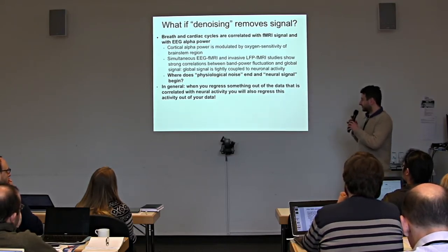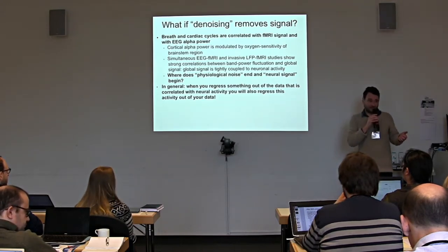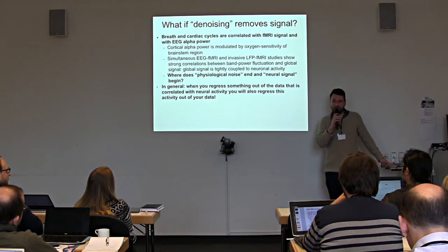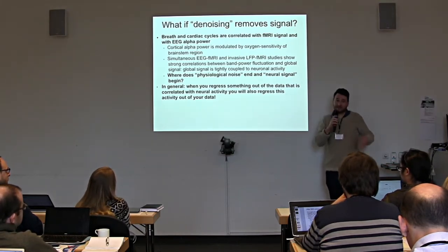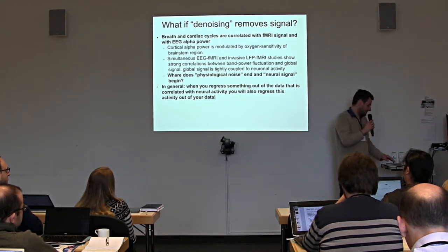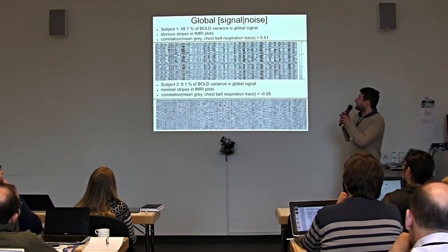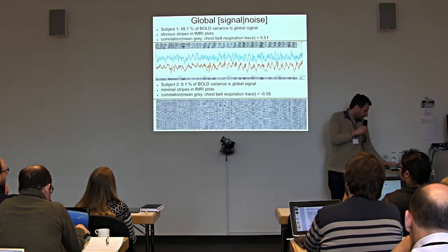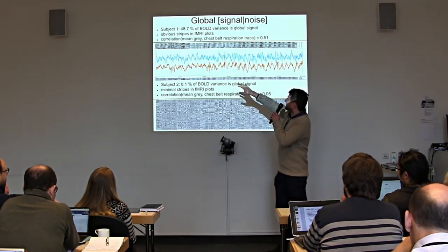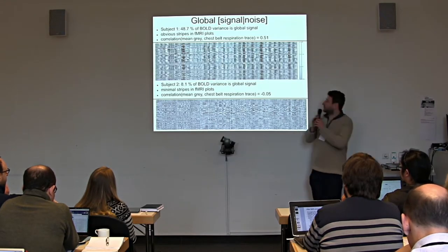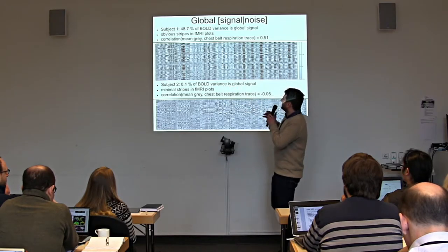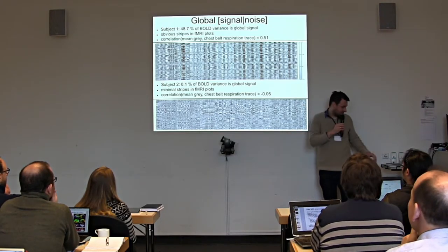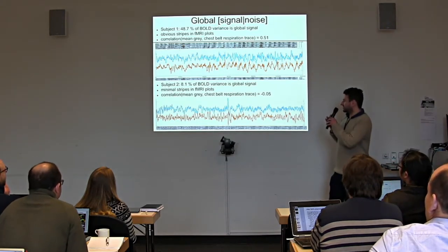Functional connectivity values are normally somewhere positively correlated. If you do global signal regression, you get a shift to center them around zero — things that were previously uncorrelated become negatively correlated, and things that were correlated become uncorrelated. You effectively destroy functional networks and invent new ones. Some studies show that subject specificity increases with global signal regression. In the ideal case, your result should be robust to that pre-processing step — if you do it or if you don't, either way it's not optimal.